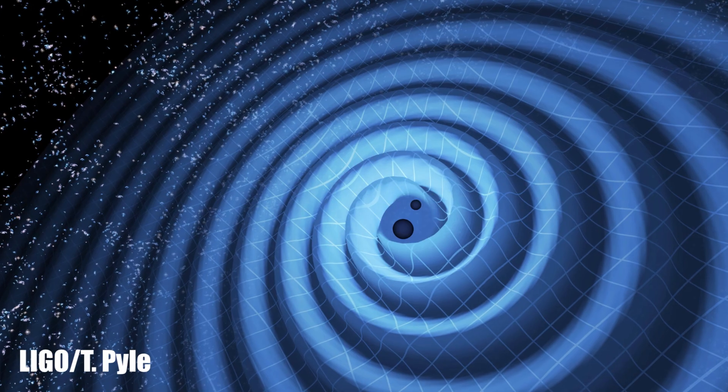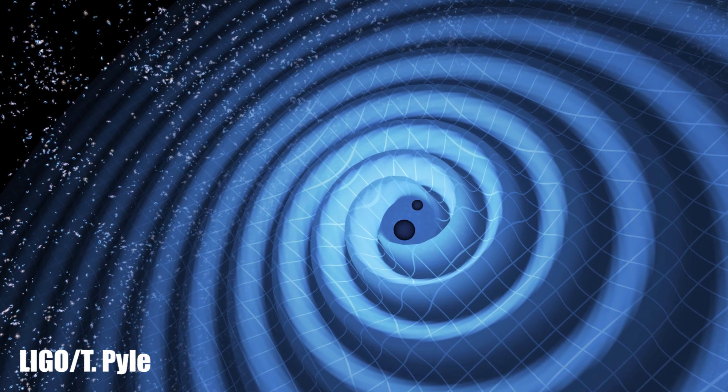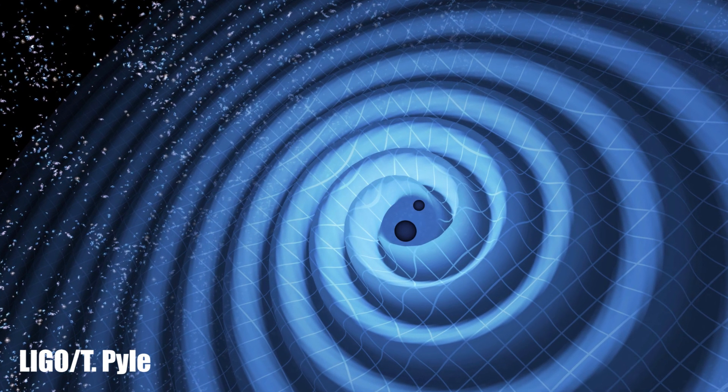When LIGO announced that they detected gravitational waves earlier this year, we were inundated with artistic renderings of gravitational waves — fantastic images like this one produced by the LIGO team themselves that help us visualize this weird phenomenon. But in all the graphics I've seen, there's a kind of disconnect between the objects and the waves that they produce. There's no way to see how one causes the other, and I think we can fix that with an actual physical demonstration of gravitational waves.